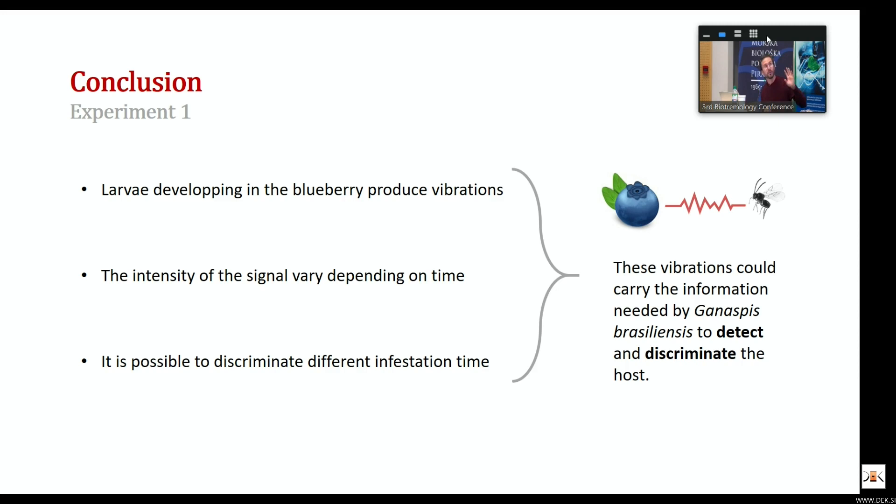In conclusion, a short summary of what we've seen so far. We have larvae that develop inside the blueberries and produce vibrations. And then also we are able to identify the different kinds of infestation time and discriminate them. This could be potentially used by Ganaspis brasiliensis to identify the larvae within the blueberry and to discriminate how old they are. So in order to get deeper into this assessment, we decided to do the behavioral evaluations.